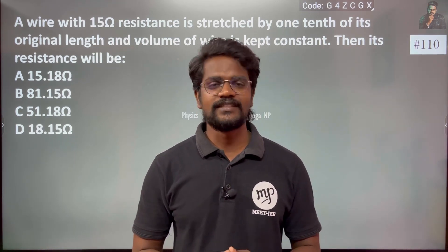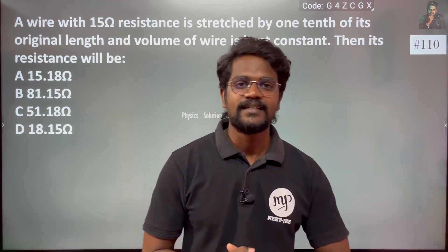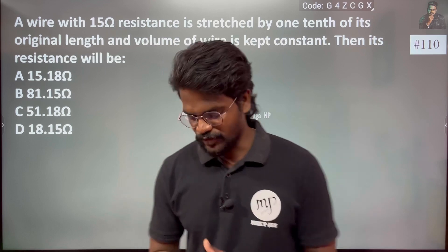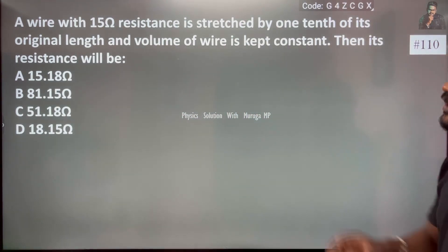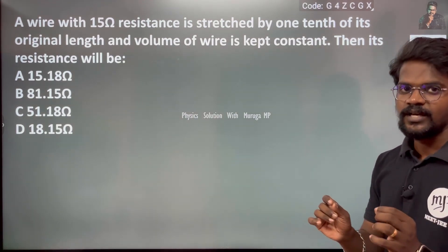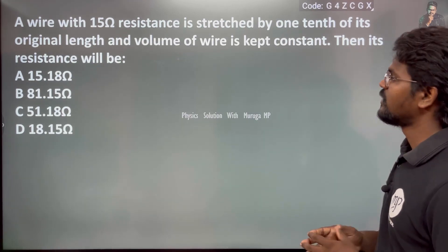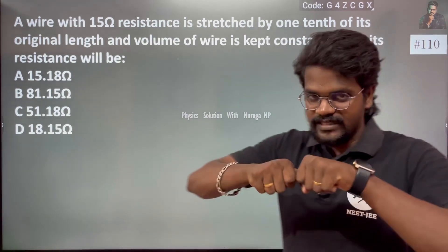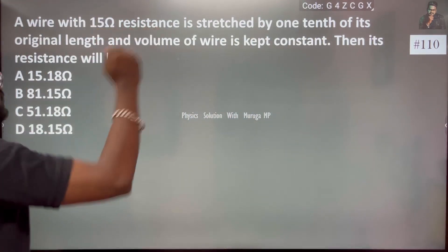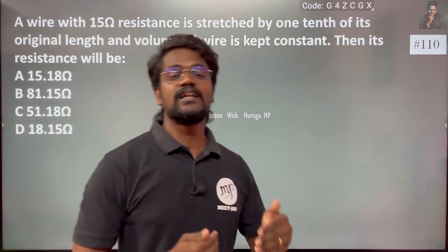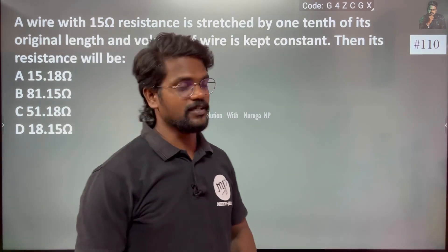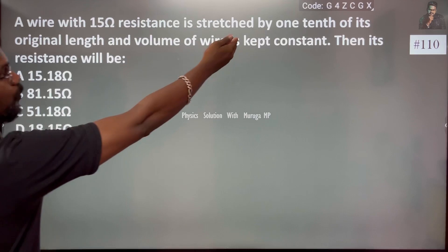Hi everyone. This is a very interesting question. A wire with 15 ohm resistance — the wire is stretched. It is stretched by one tenth of its original length, which means the new length is 1/10 more than the original length.